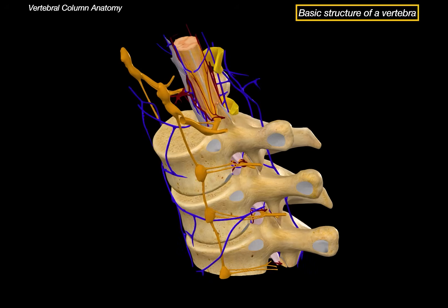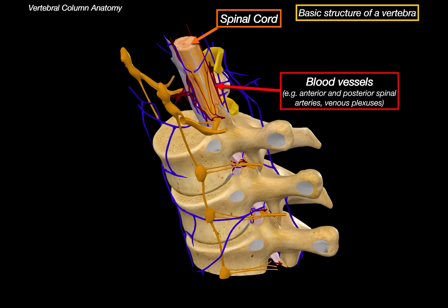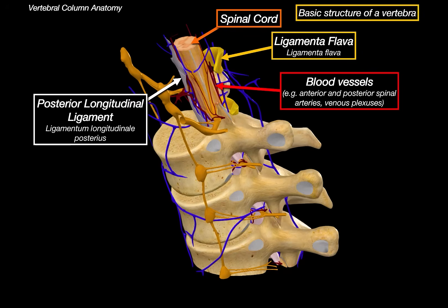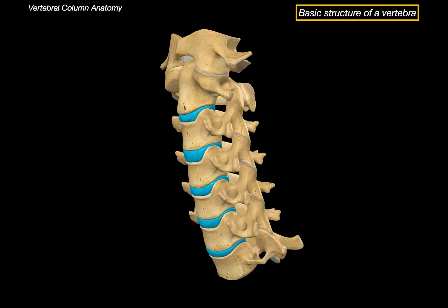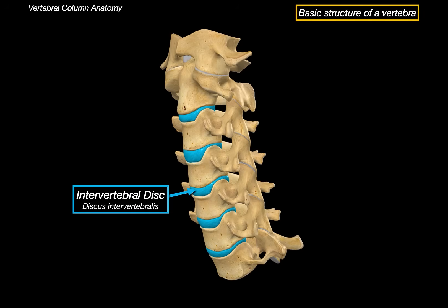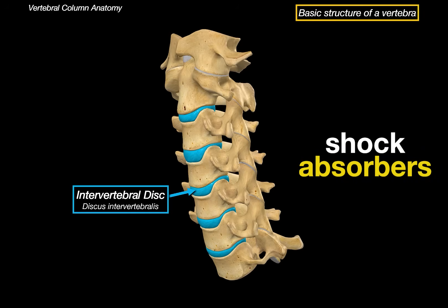Within the vertebral canal there are a lot of different structures. The noticeable ones are the spinal cord, along with meninges around them. There are blood vessels like the anterior and posterior spinal arteries and venous plexuses. There are ligaments like the ligamentum flava and the posterior longitudinal ligament. The spinal cord gives off some spinal nerves that unite to form the spinal nerve root, that exit through the intervertebral foramen. We can also see the sympathetic chain ganglia. Between the vertebral bodies of the spine you will find intervertebral discs, which allow the vertebral column to be flexible and act as shock absorbers during activities.